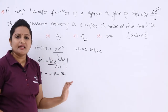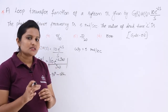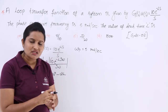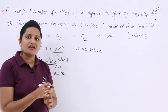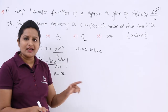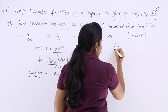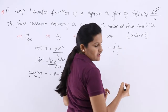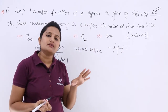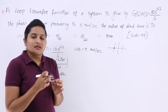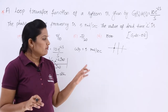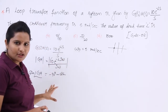Now think about the remaining given data — phase crossover frequency. First, remember the definition: phase crossover frequency is the frequency at which the phase angle of the transfer function is equivalent to minus 180 degrees, or when the Nyquist plot intersects the real axis. Generally we consider minus 180 degrees. So phase crossover frequency is the frequency at which phase is equivalent to minus 180 degrees.